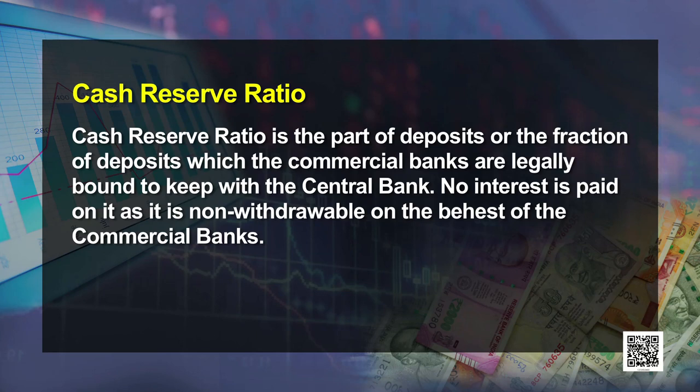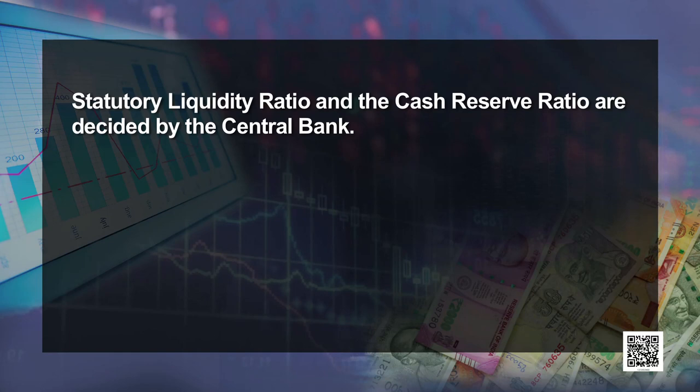No interest is paid on CRR and it is not withdrawable by the commercial bank. Both SLR and CRR are decided by the central bank. At the time of inflation, since purchasing power and credit creation capacity are very high, the central bank increases SLR and CRR in order to contract credit. This reduces the bank's credit creation and loan-providing capacity, because more of the deposits are bound with the bank itself or the central bank, so it can provide fewer loans.